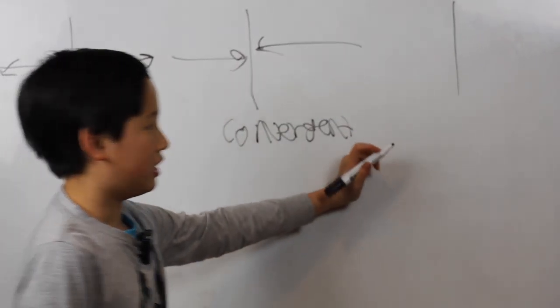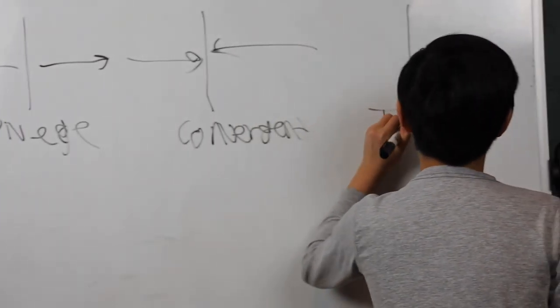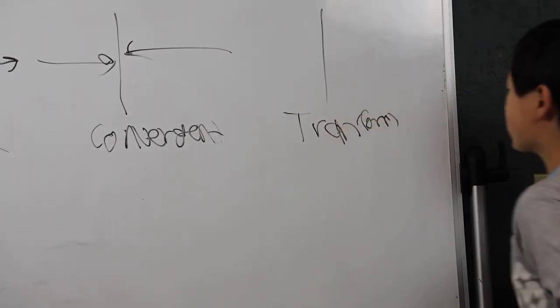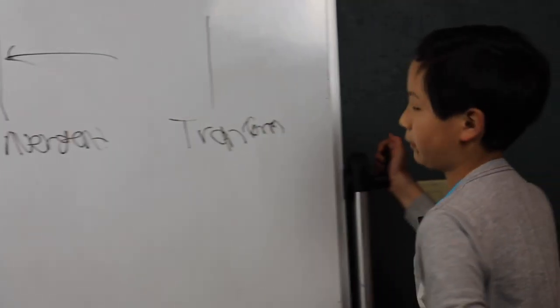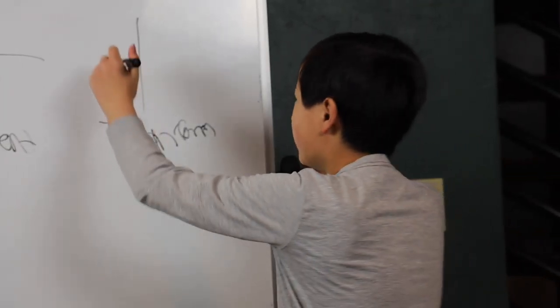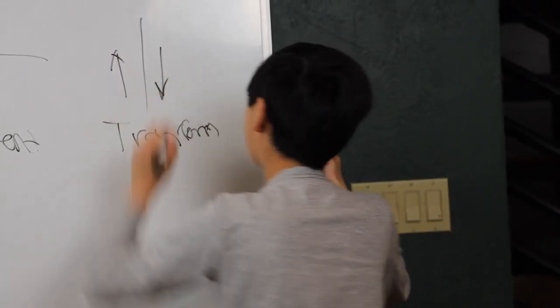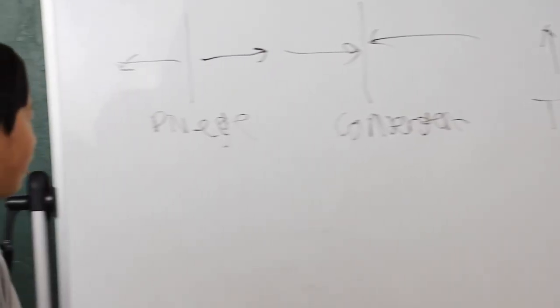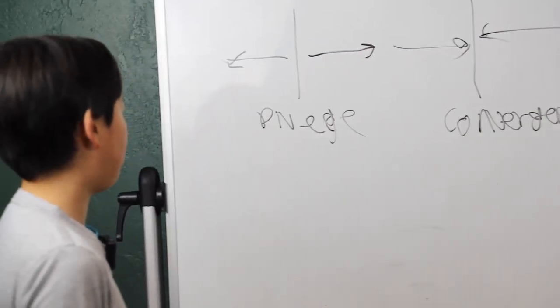And the final type of plate boundary is a transform plate boundary. These transform plate boundaries, these plates, they go side to side. So, these plate boundaries are all different, and they all have what happened.